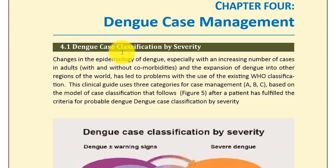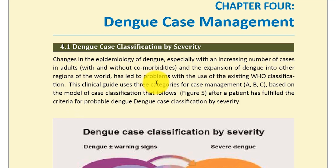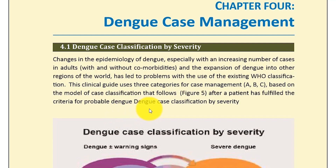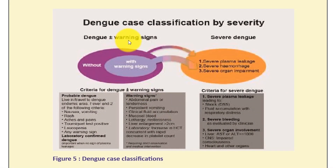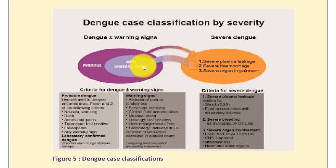Dengue case management: Dengue case classification by severity. The changes in the epidemiology of Dengue, especially with an increasing number of cases with or without comorbidities and the expansion of Dengue into other regions of the world, has led to problems with the use of existing WHO classification. The clinical guide uses three categories — A, B, C — based on the modern case classification. Once a patient fulfills criteria for probable Dengue, classification by severity includes: Dengue without warning signs, Dengue with warning signs, and severe Dengue.